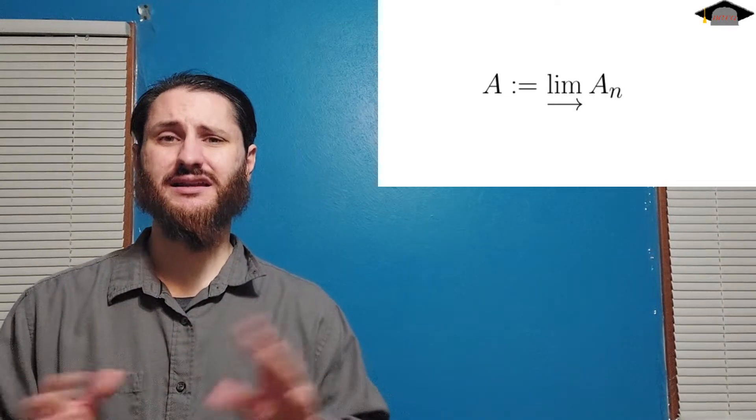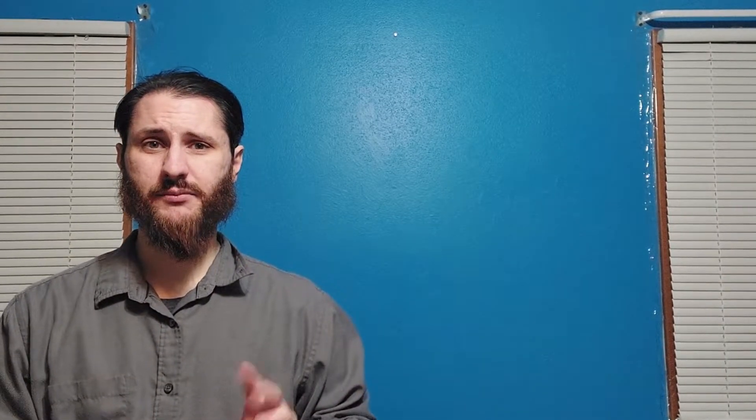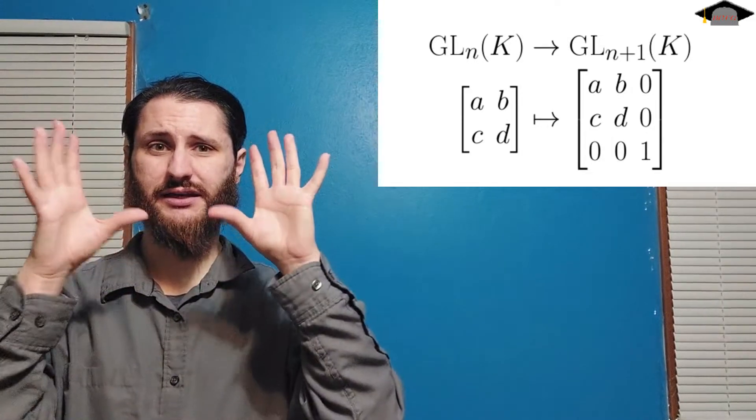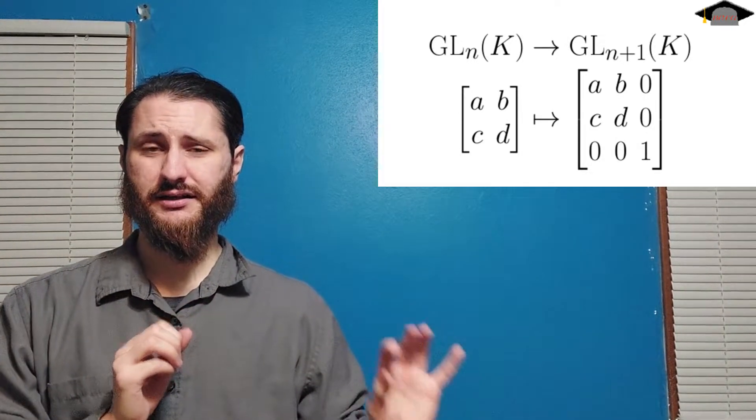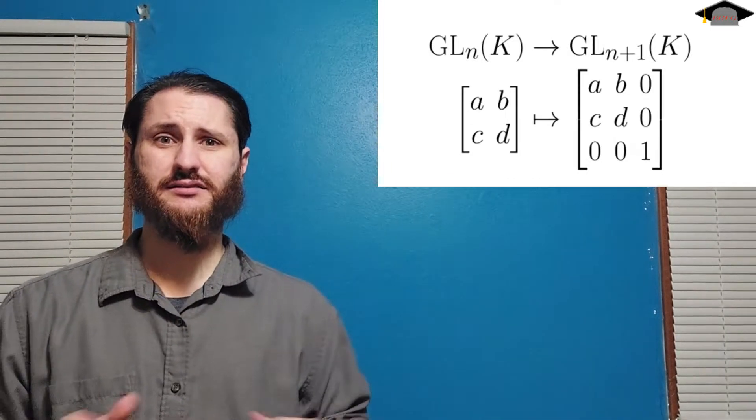Notice I haven't put any restrictions on the types of homomorphisms other than the two conditions that you saw earlier. I didn't require them to be injective or surjective or anything like that. So let's cook up an example. Let's start by letting k be a field, and our sequence of groups will be the general linear groups of every dimension — so GL1, GL2, and so on. The homomorphisms between them will be this embedding here, where we keep the matrix and just put a 1 in the very bottom right corner and 0's in that row and column.